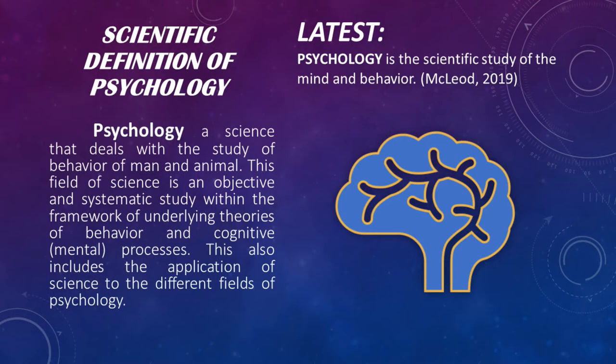What is psychology? The scientific definition of psychology — in all definitions — is a science that deals with the study of behavior of man and animal. This field of science is an objective and systematic study within the framework of underlying theories of behavior and cognitive or mental processes. This also includes the application of science to the different fields of psychology.